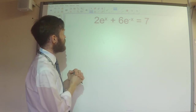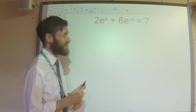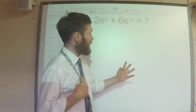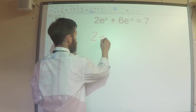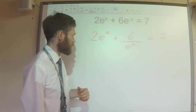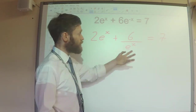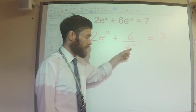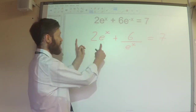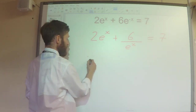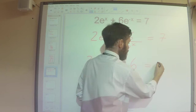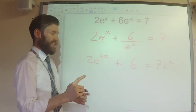Next example. We've got 2e to the power x plus 6e to the power minus x equals 7. The first thing that looks hard about this equation is the minus power. So I'm going to rewrite this as 2e to the power x plus 6 over e to the power x. That gives me a hint that if I multiply both sides of this equation by e to the power x, that's going to get rid of this complication. So 2e to the power x times e to the power x will be 2e to the power 2x, this becomes 6, and over here 7e to the power x. Now I can see I've got a hidden quadratic.